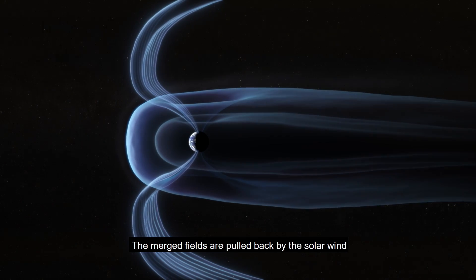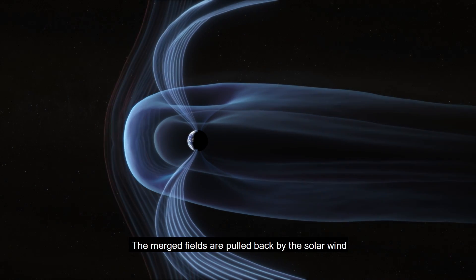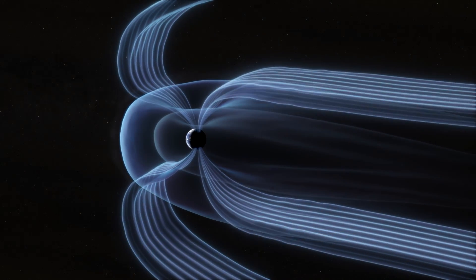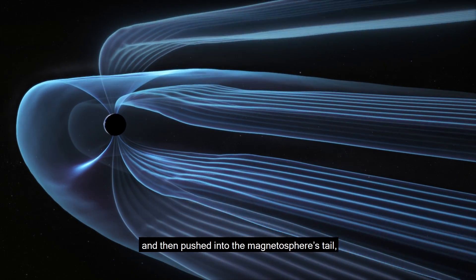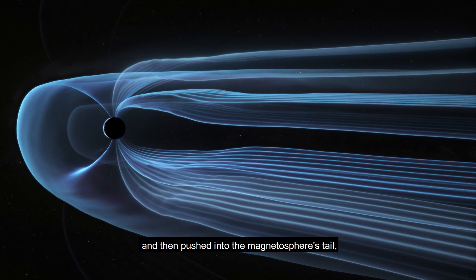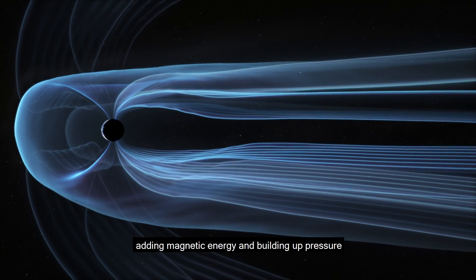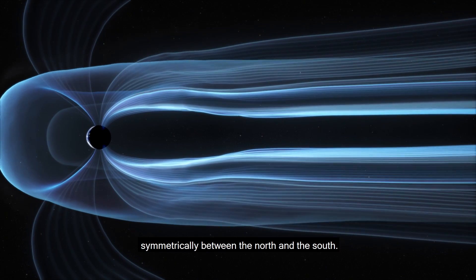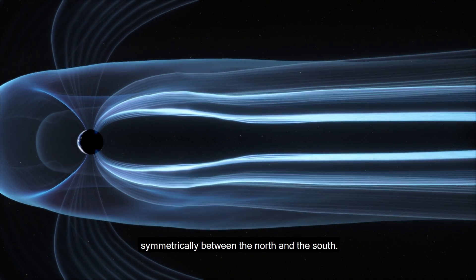The merged fields are pulled back by the solar wind and then pushed into the magnetosphere's tail, adding magnetic energy and building up pressure, symmetrically between the north and the south.